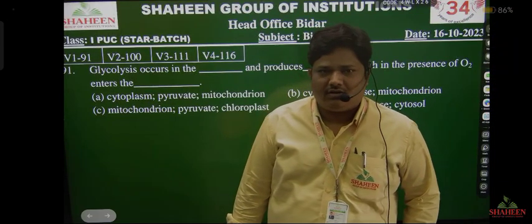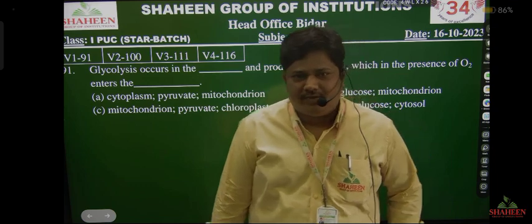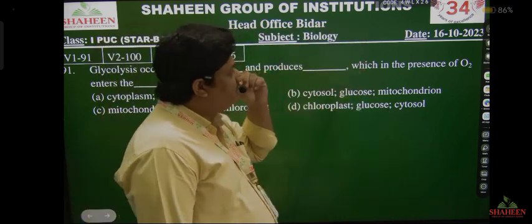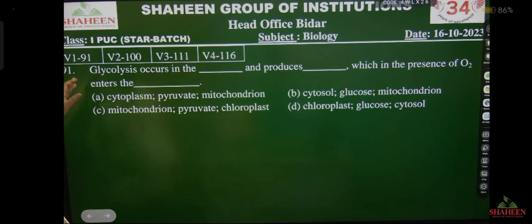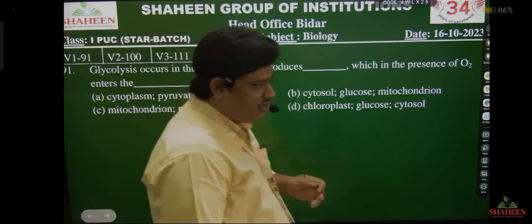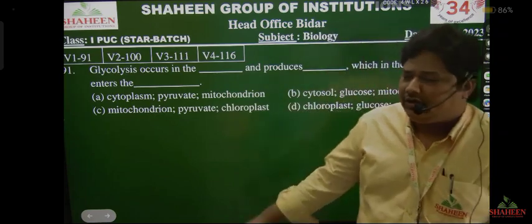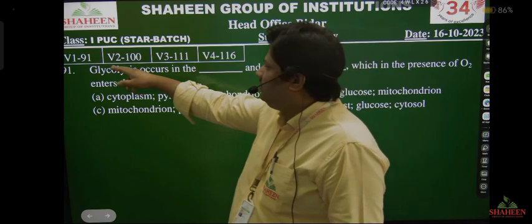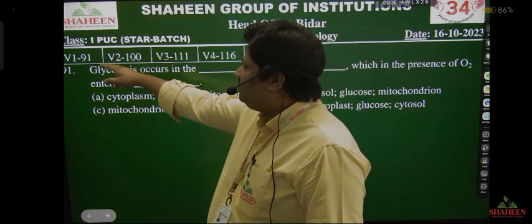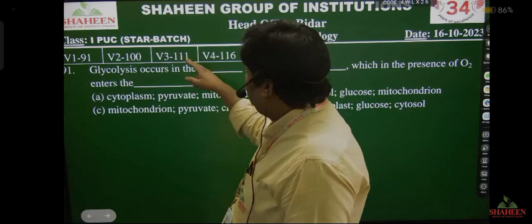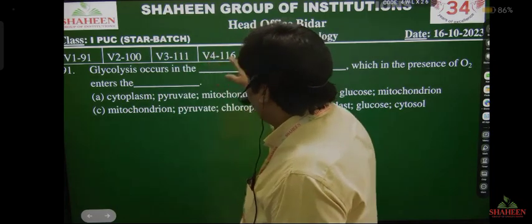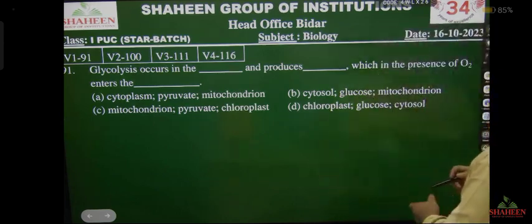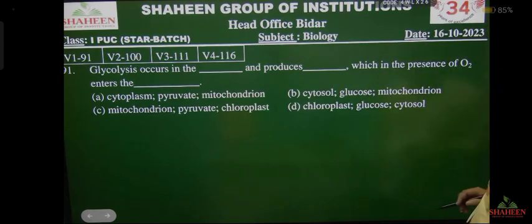Hello friends, good afternoon. Let's do paper analysis of 16th October bio paper. You can see here different four versions. According to your version, you can check the question number. Question number 91 in version 1, version 2 it's 100, version 3 it's 111, version 4 it's 116. According to your version, you can check the question number. Let's do these questions.